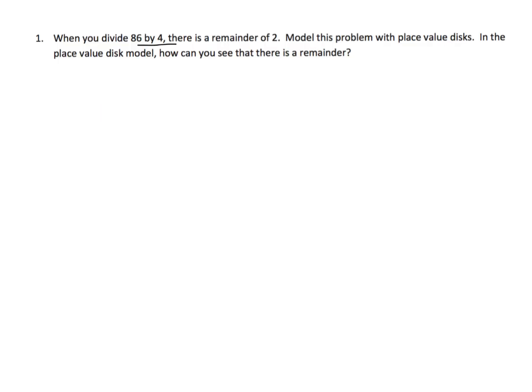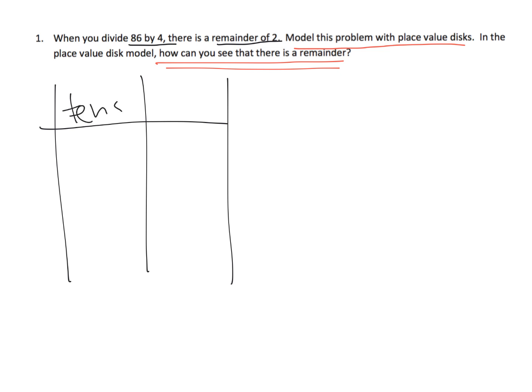So when you divide 86 by 4, there's a remainder of 2. We want to model this problem using place value disks. And then we're supposed to talk about what each of those portions of that place value disk means in terms of the standard algorithm. So we're going to begin by modeling. Here's our tens place, and here's our ones place. So let's model 86. So that's going to be 1, 2, 3, 4, 5, 6, 7, 8 tens and 1, 2, 3, 4, 5, 6 ones. So we've just modeled 86.